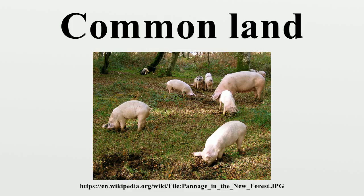Pasture commons are those where the primary right is to pasture livestock. In the uplands they are largely moorland; on the coast they may be salt marsh, sand dunes or cliffs; and on inland lowlands they may be downland, grassland, heathland or wood pasture.